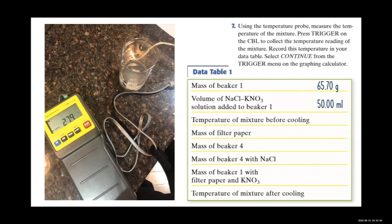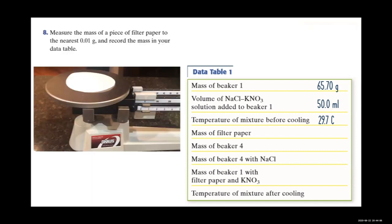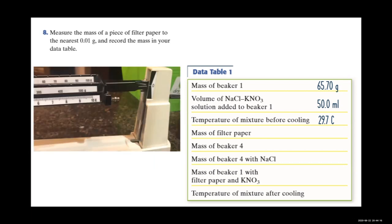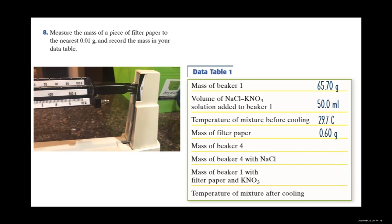Using the temperature probe, measure the temperature of the mixture. Our temperature before cooling was 29.7°C, which is a little warmer than room temperature — likely because the solution had just been made. Measure the mass of a piece of filter paper to the nearest 0.01 gram and record it. Our filter paper was 0.60 grams.